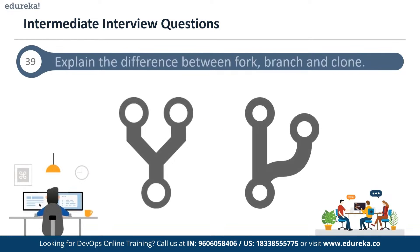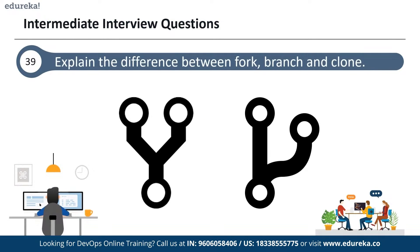The next question is: what is the difference between fork, branch, and clone? A fork is a copy of a repository — normally you fork a repository so that you are able to freely experiment with changes without affecting the original project. Forks are most commonly used to propose changes to someone else's project or to use someone else's project as a starting point for your own idea. Git cloning means pointing to an existing repository and making a copy of it in a new directory at some other location, either on the local file system or on a remote machine.